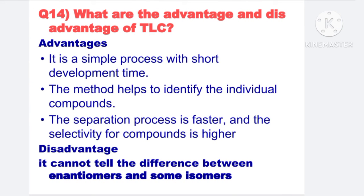Next: What are the advantages and disadvantages of TLC? The advantages are: it is a simple process with short development time; the method helps to identify individual components; the separation process is faster and the selectivity for components is higher. The disadvantage is it cannot tell the difference between enantiomers and some isomers.